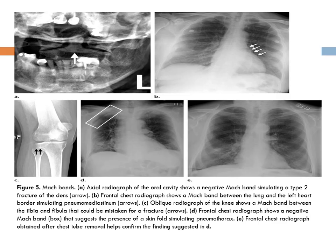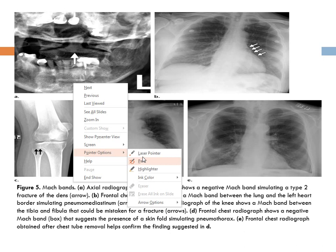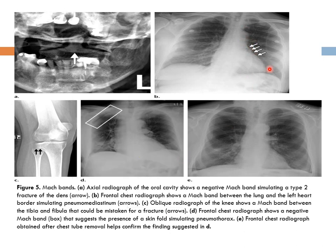In example A, at the base of a bone there is a dark line — you might interpret it as a fracture, but actually there is no fracture. Another example: at the left cardiac border you frequently see a dark line; you may interpret this as pneumomediastinum, but actually this is a negative Mach band. Another example: in an X-ray of the knee joint there is a line you may interpret as a fracture, but on the lateral view there are no other signs of fracture — it's an illusion. It's also frequent on the chest X-ray, formed by the skin fold.